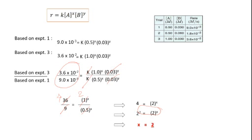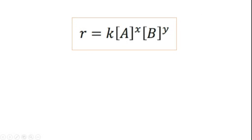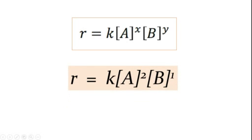Now that we have X = 2 and Y = 1, substituting into the general rate law gives: Rate = K[A]²[B]¹. This is the rate law for our hypothetical reaction 2A + 2B → 2AB. The reaction is second order with respect to A and first order with respect to B. The overall order is 2 + 1 = 3. In the next video, we will see the order of reaction. Thank you.